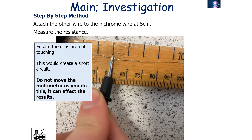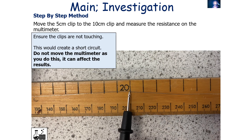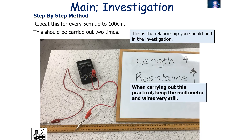Attach the other wire to the nichrome wire at five centimetres and measure the resistance. Ensure the clips are not touching each other, as this would create a short circuit. Move the five-centimetre clip to 10 centimetres and measure the resistance, again not moving the multimeter. Repeat this every five centimetres up to 100 centimetres, and carry out the investigation three times for each value so you can calculate an average resistance.